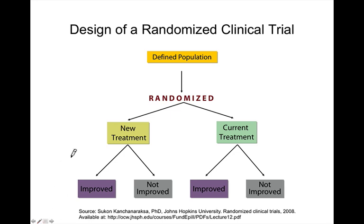Basically, a defined population is identified — for example, a group of people with the same disease. That group is then randomized, a process in which there is a division of the group, usually into two subgroups, done in such a way that there is no influence on the part of the people making the allocation. It is usually done with a random number table, which takes any potential for selection bias out of the process.